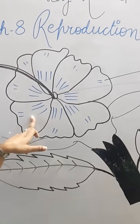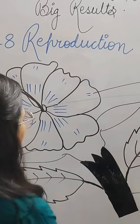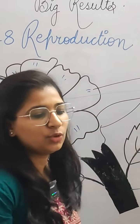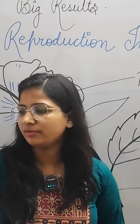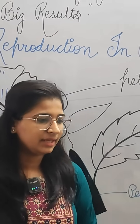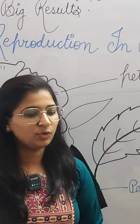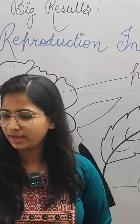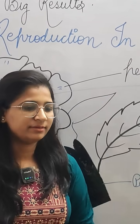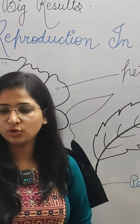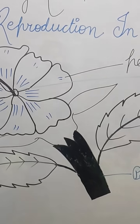So this is the diagram. Today we will do one type of experiment — we will see how these parts look like in a real flower. Let me show you what the parts of the flower look like. Come on.